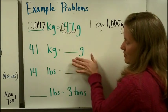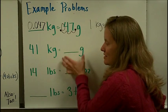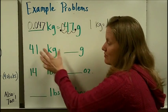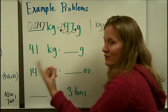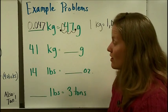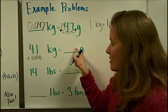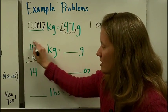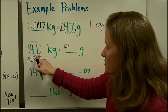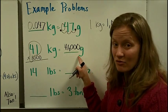Going the opposite way, from kilograms to grams: remembering the same relationship, we want to make the number bigger because there are many grams in 41 kilograms — every kilogram has 1,000 grams. So multiply by 1,000: use the zeros trick, 41 times 1,000, add three zeros. So 41 kilograms equals 41,000 grams.